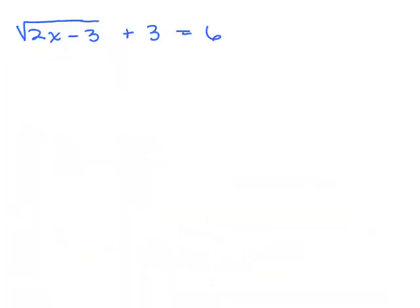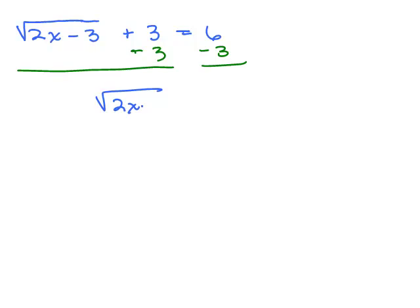Here's a problem: square root of 2x minus 3, plus 3, equals 6. Step 1 is to isolate the square root. We want to keep the square root of 2x minus 3 on one side, so we subtract 3 from both sides, isolating the radical expression on one side of the equation.